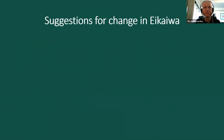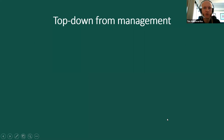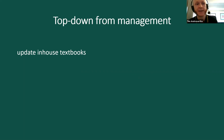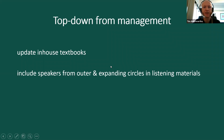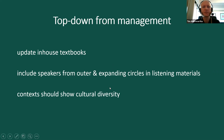I'd like to make some suggestions for change in the eikaiwa context. I'll talk about how changes could be made top-down from management, then what teachers can do themselves. Some eikaiwa schools make their own in-house textbooks, which gives them a really good opportunity to make changes. They should update those in-house textbooks to include speakers from the outer and expanding circles in the listening, and the contexts should show cultural diversity.